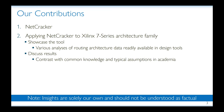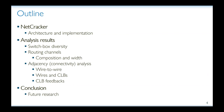Our contributions in this work are twofold. First, we develop Netcracker. And second, we showcase its capabilities by using it to analyze the routing network of a representative device of the Xilinx 7 Series family. We discuss possible reasons behind the design choices, and we contrast the obtained results with both common knowledge and the typical assumptions in academia. The presentation will be organized as follows: I will give a brief description of the architecture and implementation of Netcracker, then present some of the results focusing on switch box diversity, routing channel composition and width, and the adjacency analysis concerning wires and CLBs. After that, I will conclude the talk.